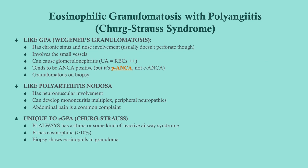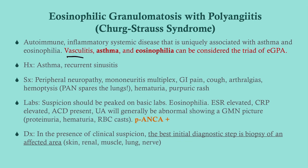EGPA shares similarities with GPA and polyarteritis nodosa, but the unique features are: always some form of asthma or reactive airway syndrome, always eosinophilia, and biopsy shows eosinophils in the granulomas — eosinophilic granulomas. The triad is vasculitis, asthma, and eosinophilia. Look for a history of asthma and recurrent sinusitis. These patients are less likely to get the dramatic sinusitis of Wegener's — no saddle nose deformity or septal perforation. If there are no pulmonary symptoms, think polyarteritis nodosa instead.